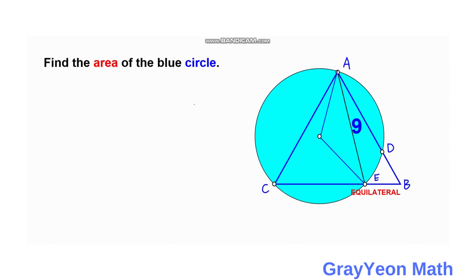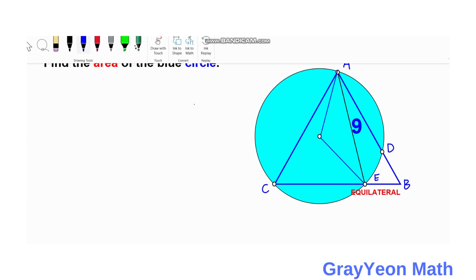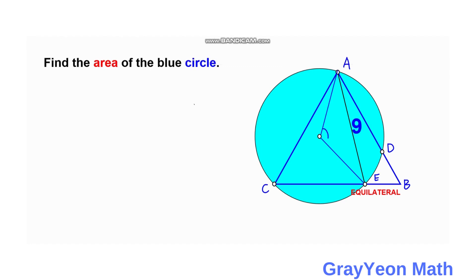Next, we need to find this angle. Since it is given that this triangle is an equilateral triangle, this inscribed angle is 60 degrees, and these two lengths are the radii of the circle.